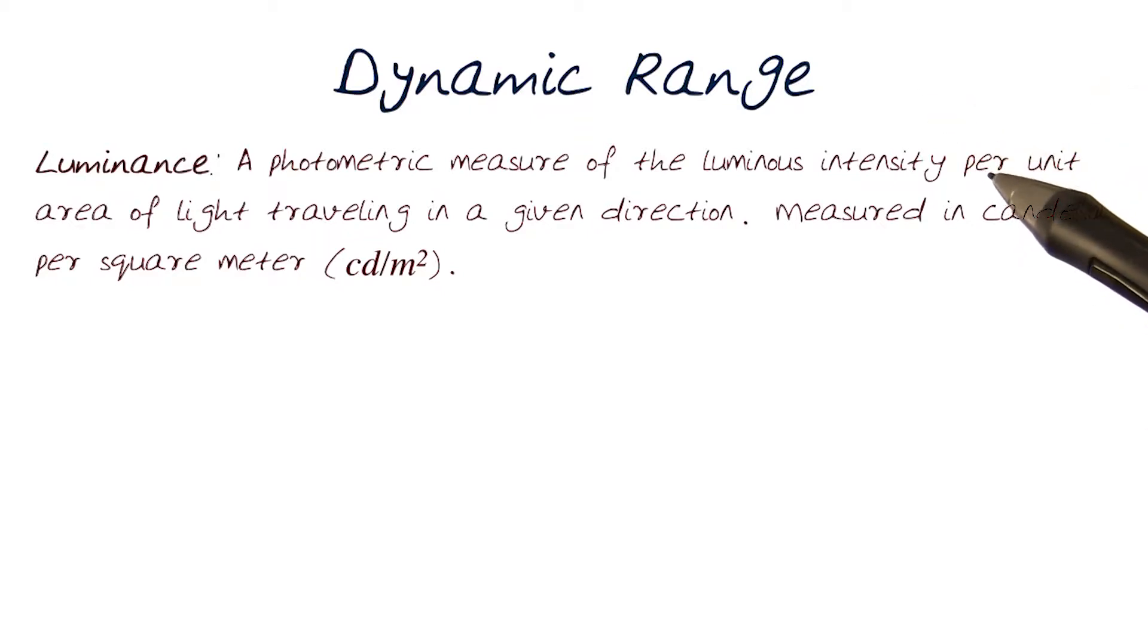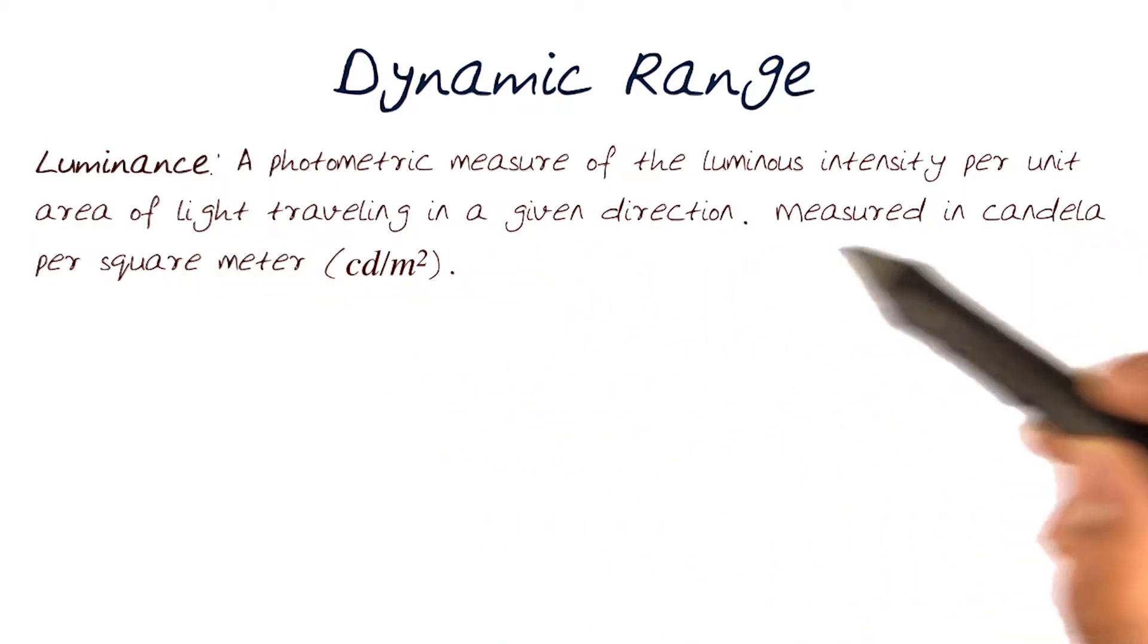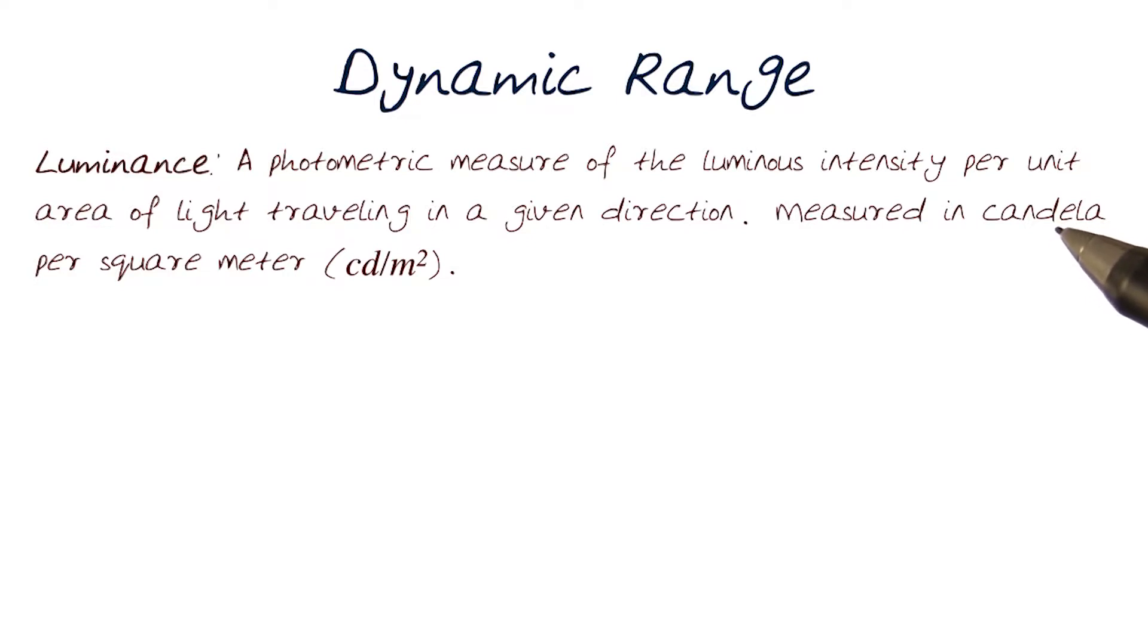To help us understand dynamic range, let's first define the term luminance. Luminance is basically a measure of the intensity of light per unit area, accounting for the light traveling in a given direction.